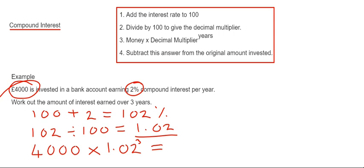That will give an answer of £4244.83. So this is the value of the investment over the three years. But our question asked is work out the amount of interest earned over three years, it's not the value of the investment.